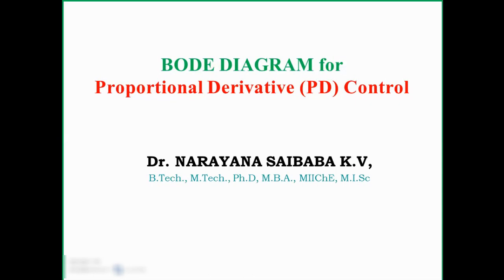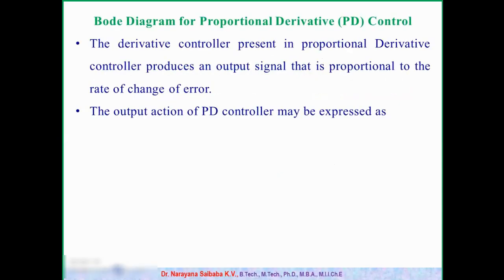In proportional derivative controller, the derivative control present produces an output signal that is proportional to the rate of change of error. The output of PD controller can be given as P = PS + KCE + KCE*tau_D*dE/dt.